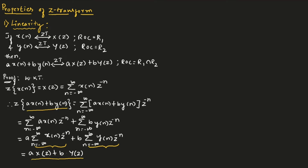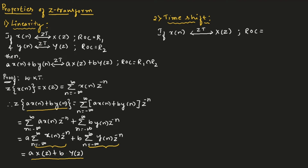The second property is the time shift property. It states that if we take X of n and perform Z transform, we will get X of Z with ROC equal to R. Then X of n minus N naught, if we perform Z transform, we will get Z to the power of minus N naught times X of Z.